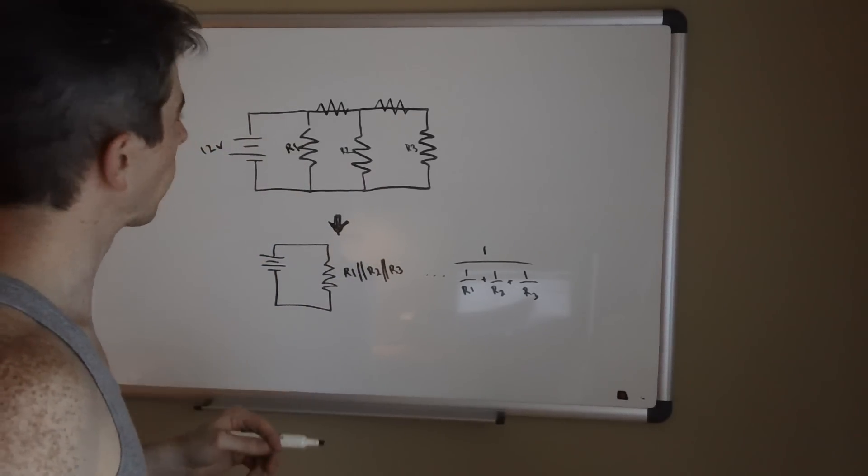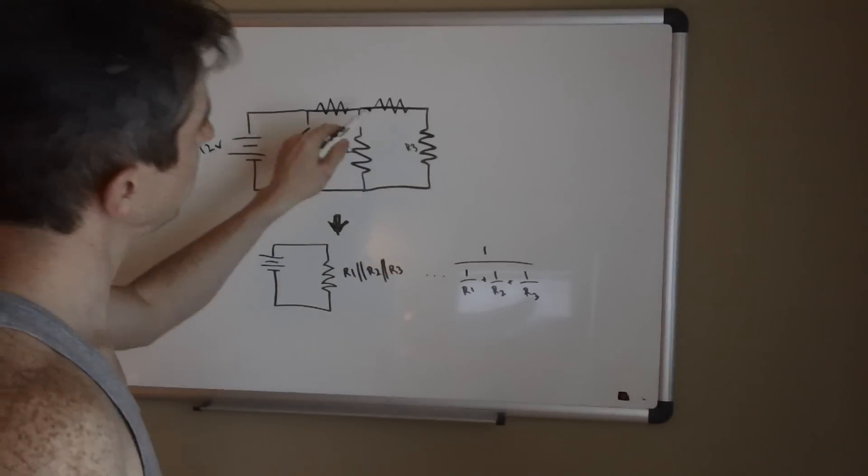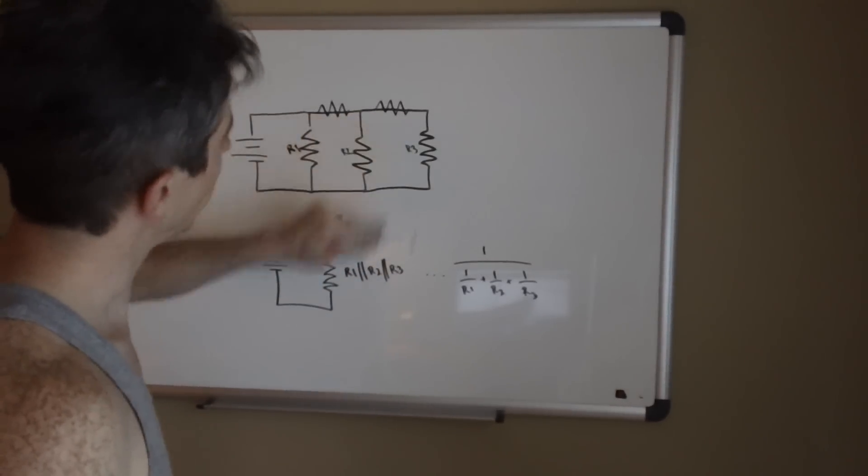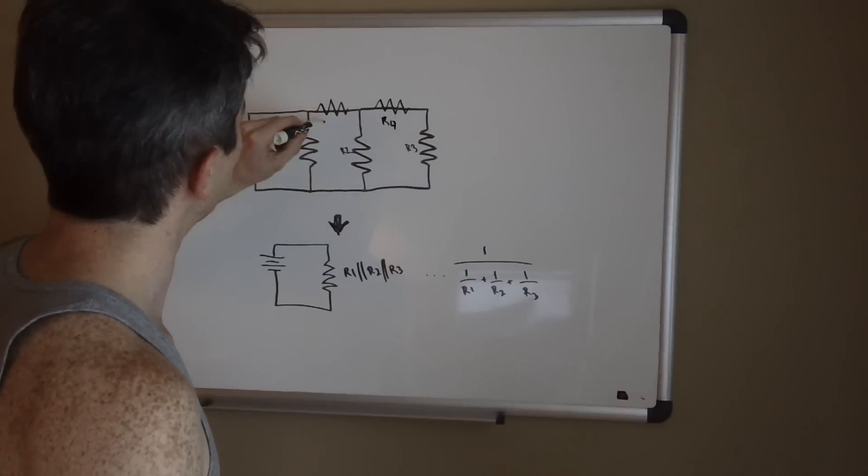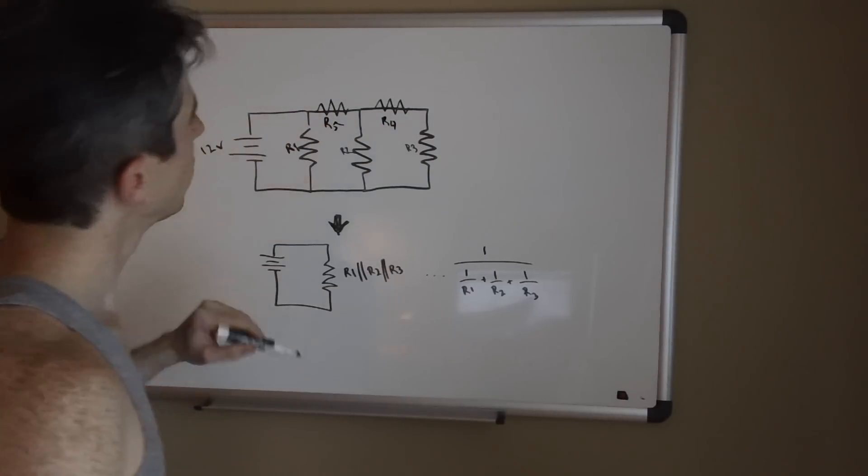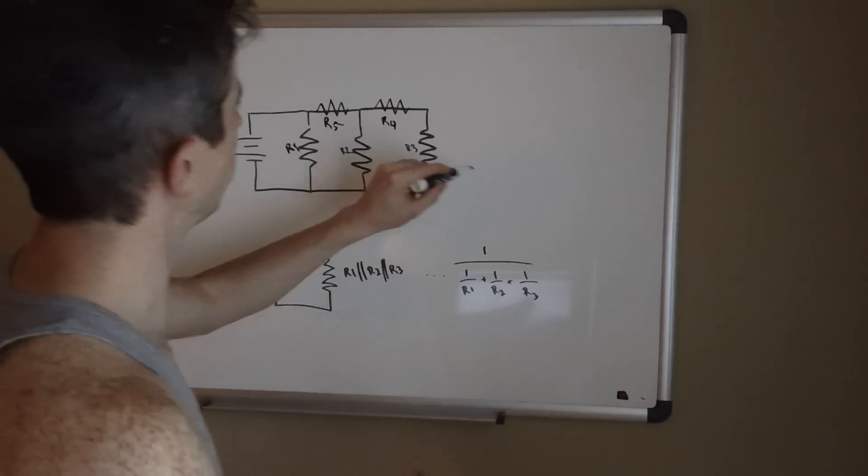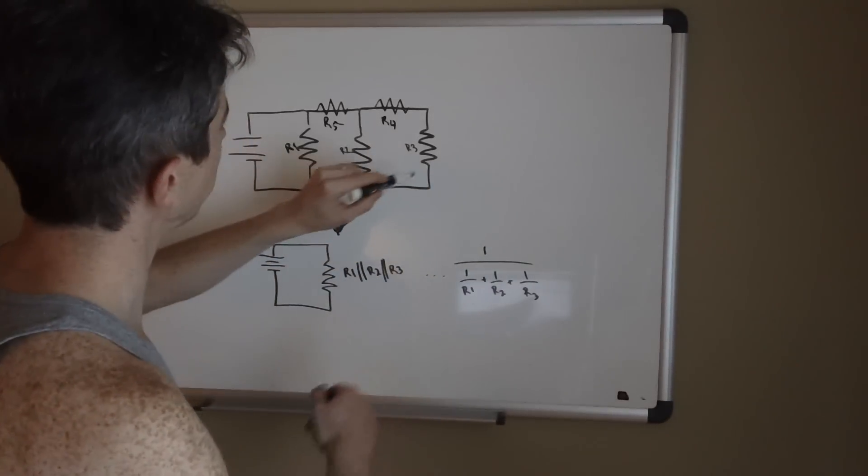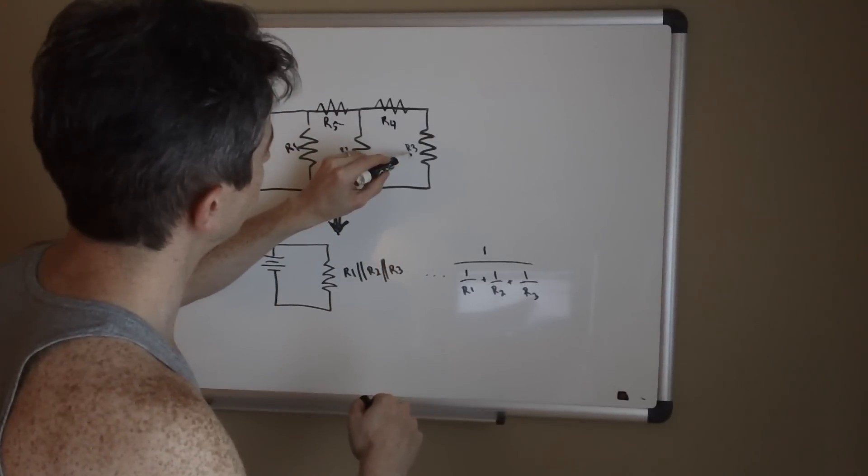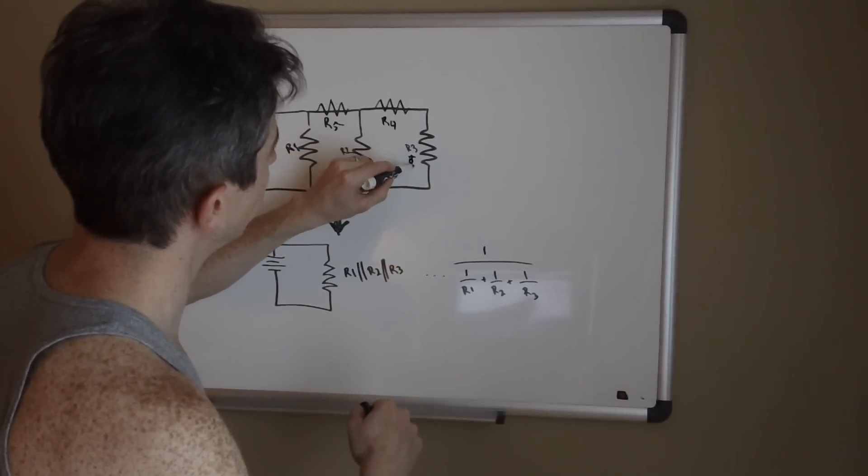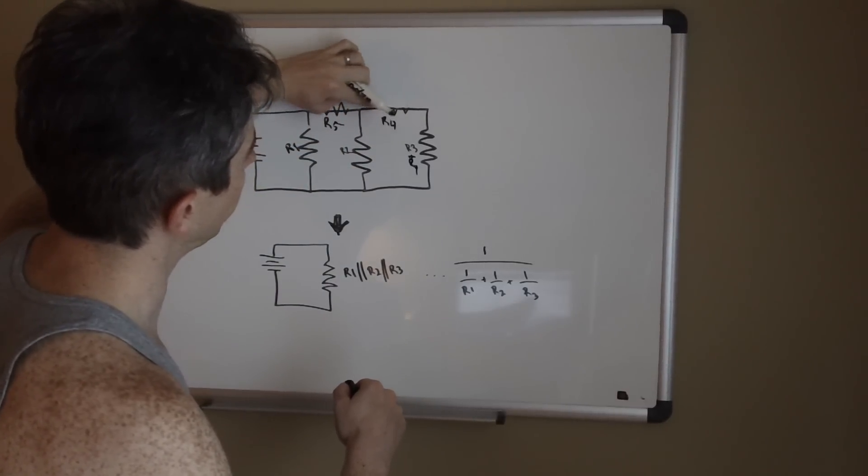The general rule is to work from the outward in towards the battery. So in this case you'd start by combining—let's label these R4 and R5—so in this case you'd actually start by transforming this into basically this circuit becomes R3 plus R4, and this goes away because we know that resistors in series is the equivalent of their sum total resistance.